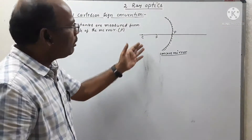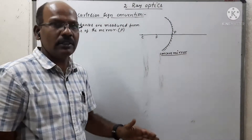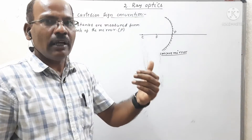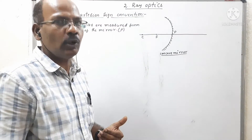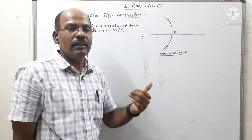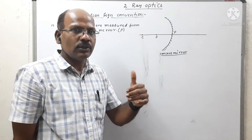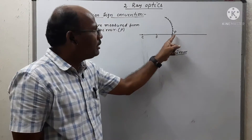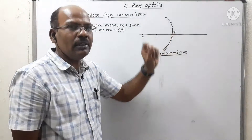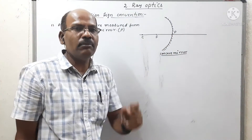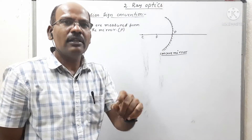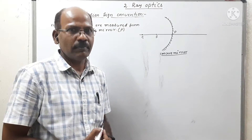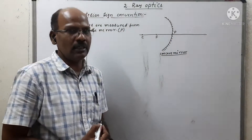All distances — that means object distance, image distance, height of the object, or height of the image — are measured from the pole, which acts as the origin in the coordinate system. This is the first sign convention.